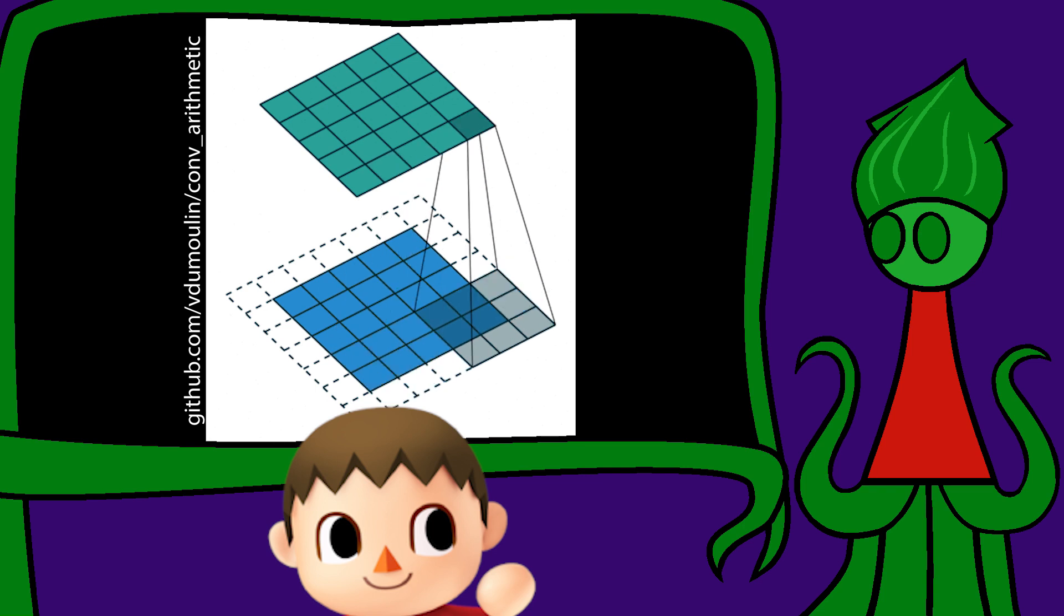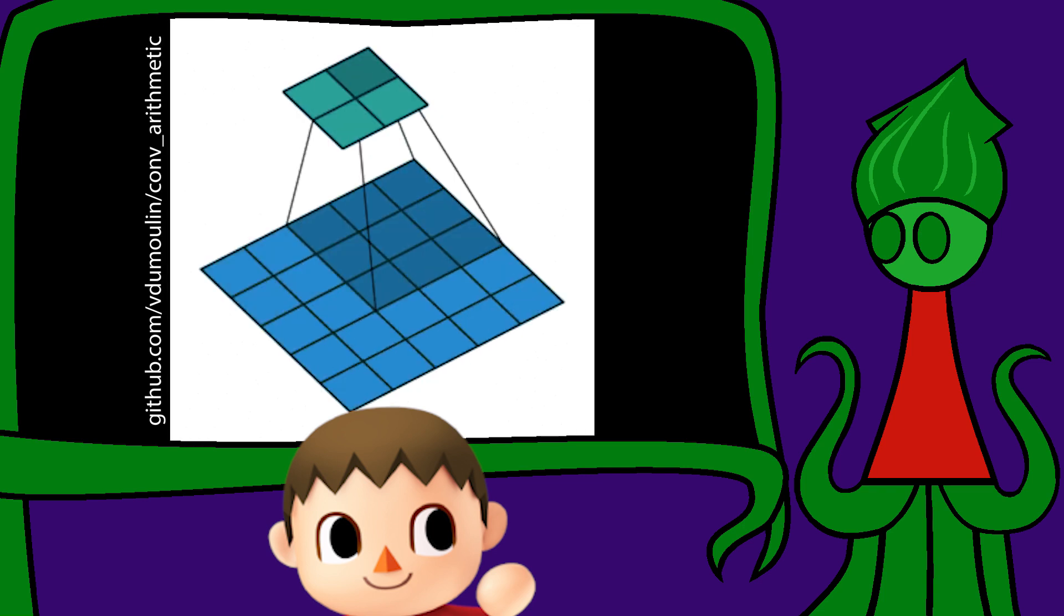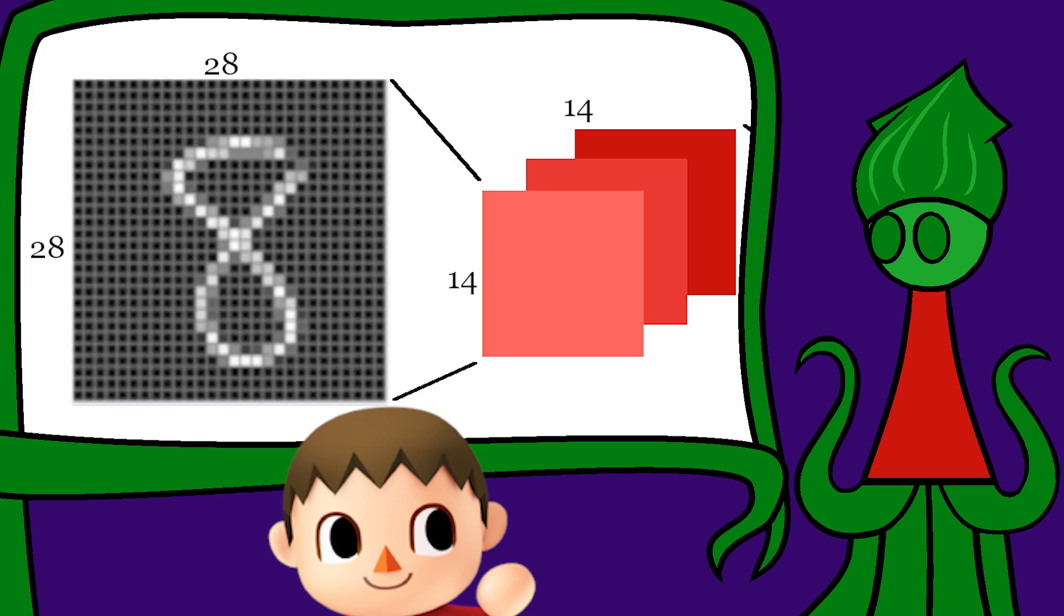The tutorial also uses strides of size 2, meaning that the filters skip rows and columns. With the strides and the padding, the convolution makes a 28 by 28 matrix into a 14 by 14 matrix with a layer for every filter.